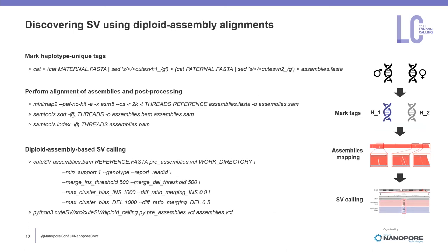Another common use is to discover haplotype-phased structural variations from diploid assembly alignments. There are three major steps: first, mark haplotype-unique tags respectively from maternal and paternal assemblies; then apply Minimap2 to complete assembly alignment and perform post-processing; finally, identify haplotype-phased structural variations with Qtai3 using the diploid calling mode.